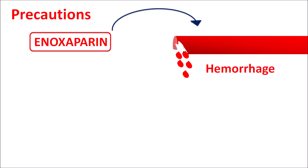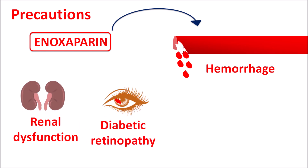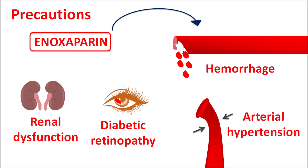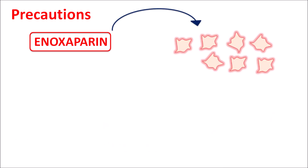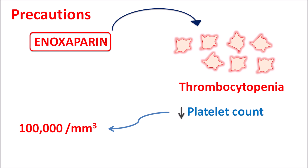Enoxaparin can also increase hemorrhage risk in patients with renal dysfunction, diabetic retinopathy, and uncontrolled hypertension. Additionally, even though it is less pronounced than with regular heparin, enoxaparin can still reduce platelet count, causing thrombocytopenia. When the platelet count falls below 100,000 (1 lakh), enoxaparin should not be used.